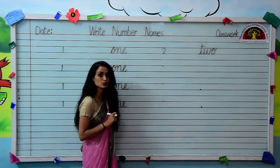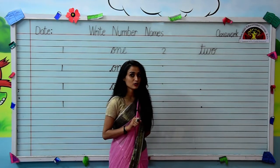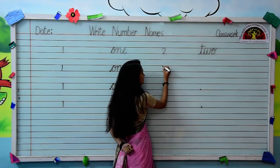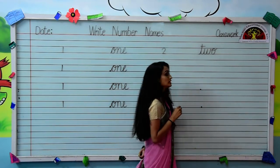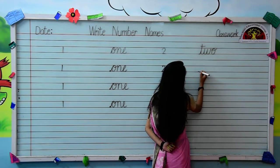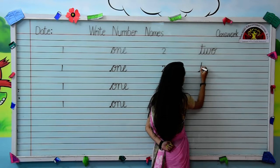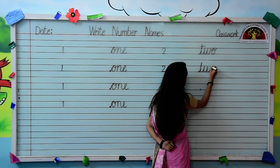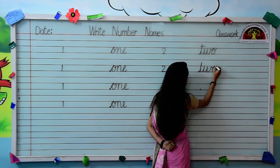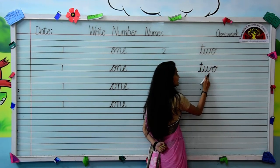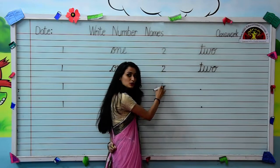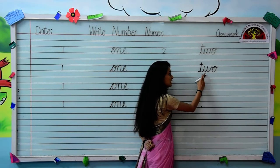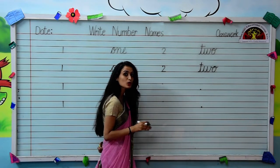Now we will see how to write the spelling of numeral 2. The spelling of numeral 2 — firstly we will write numeral 2 like this. Now let's see how to write the spelling. Write T-W-O. This is numeral 2, and the spelling of numeral 2 is T-W-O.